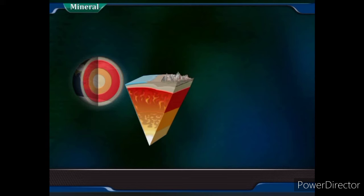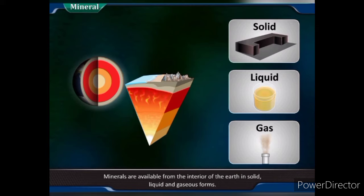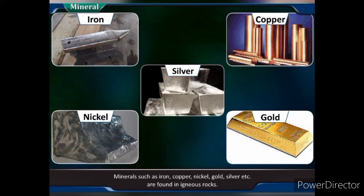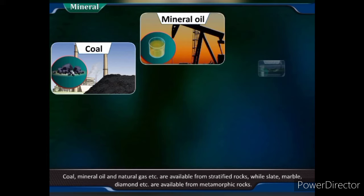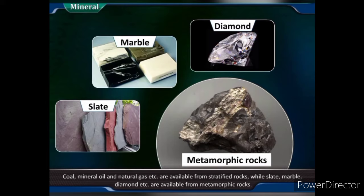Mineral: A mineral is that matter which is formed due to a natural organic or inorganic process and has a specific chemical composition. Minerals are available from the interior of the earth in solid, liquid and gaseous forms, and depend on the geological structure of the surface of the earth. Minerals such as iron, copper, nickel, gold, silver, etc. are found in igneous rocks. Coal, mineral oil and natural gas are available from stratified rocks, while slate, marble, diamond, etc. are available from metamorphic rocks.